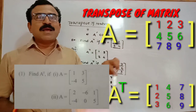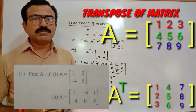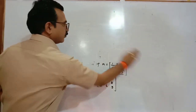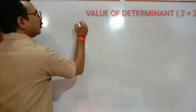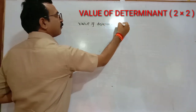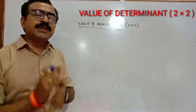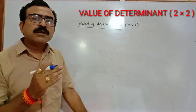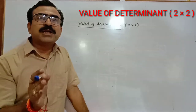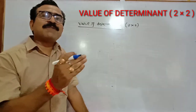In this way you can calculate the transpose of any matrix. Some examples are displayed on your screen — note them and solve at home. Now let us learn about the value of determinant. If you are given a determinant of order two by two and need to calculate its value, the value of a 2×2 determinant is calculated by performing simple cross multiplication.